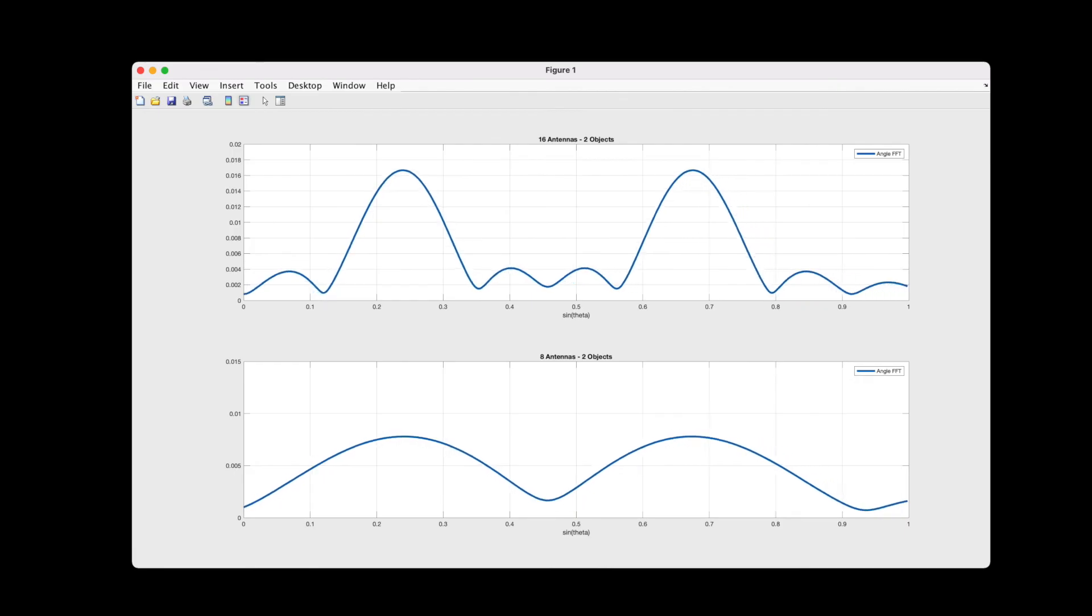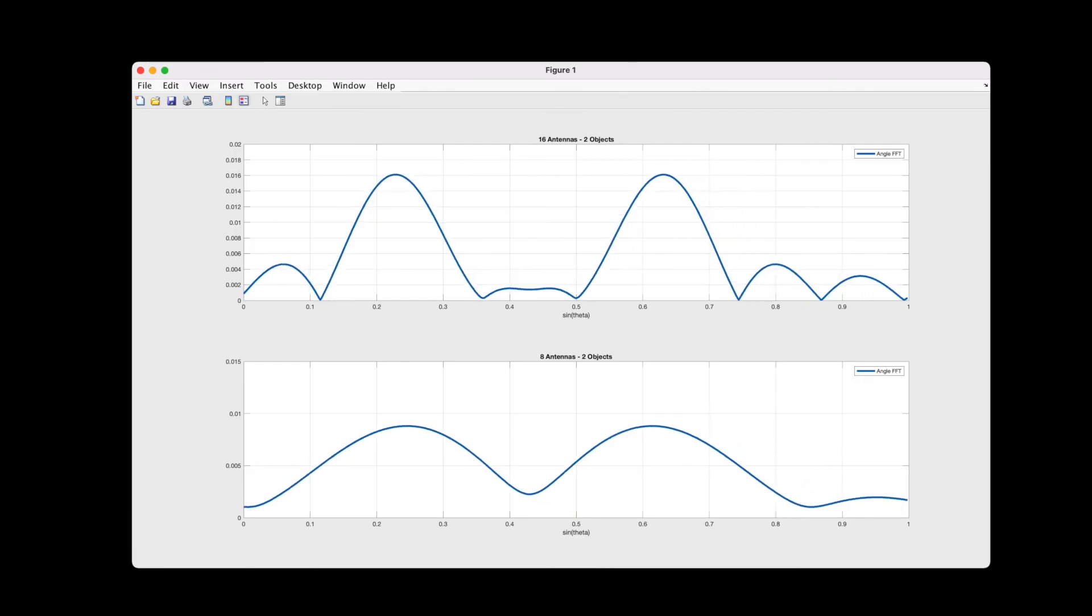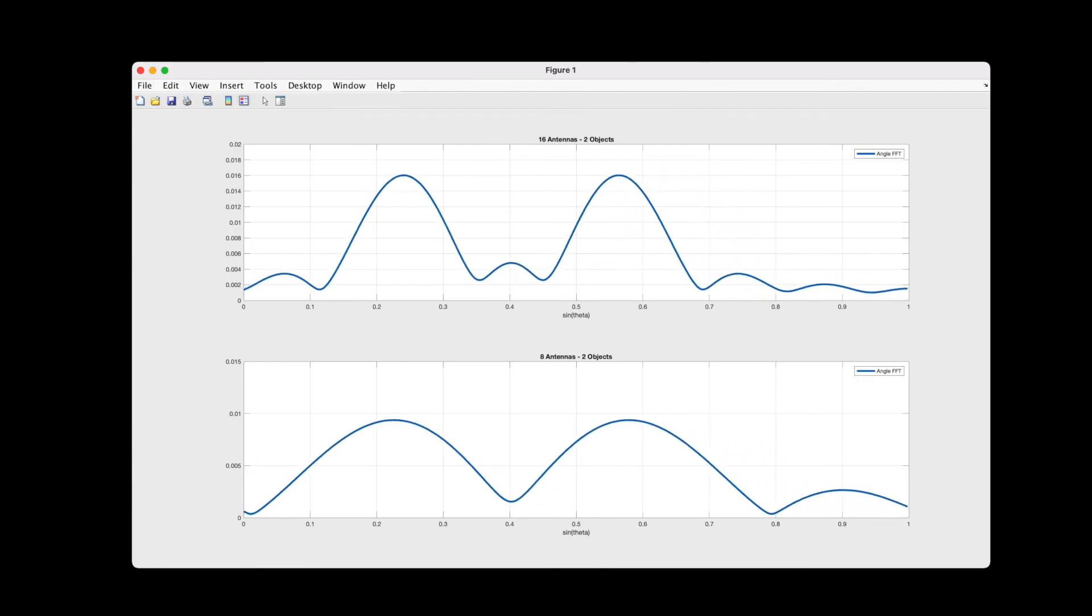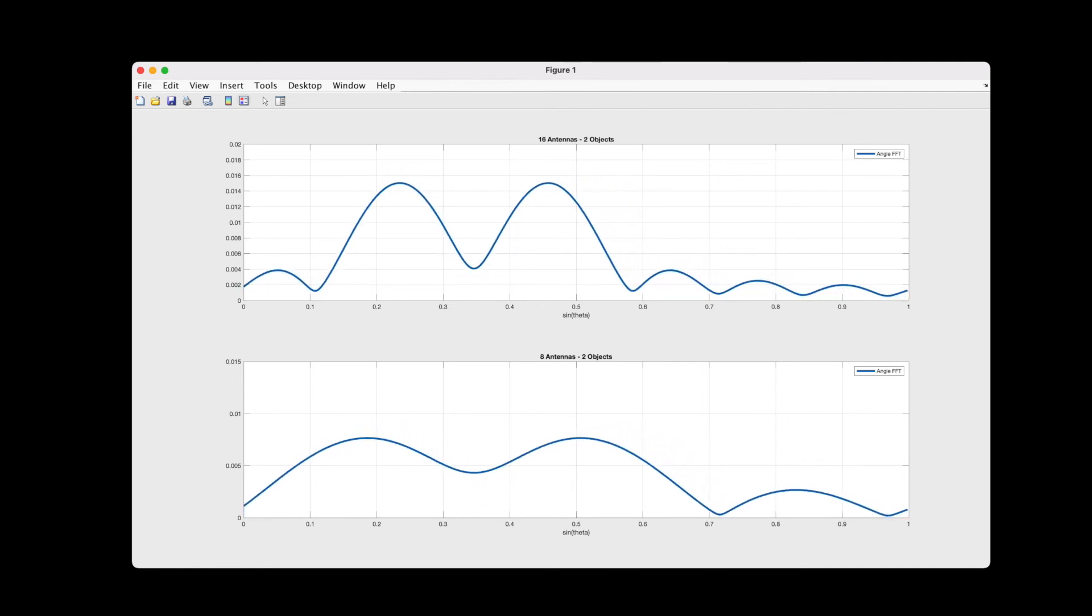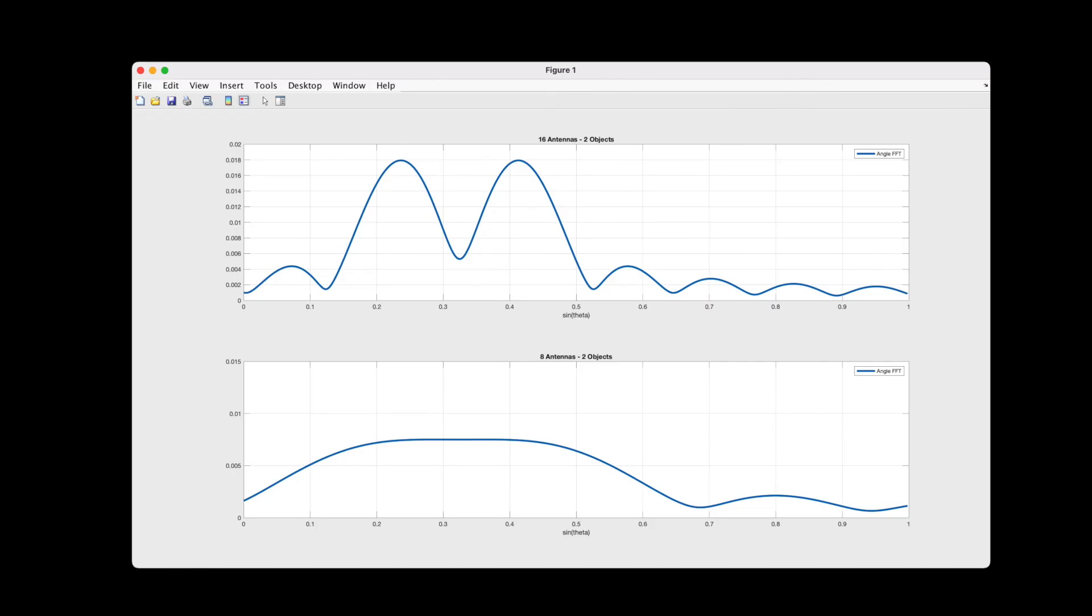But as I slowly move the right object closer to the other one, we can see how the array with eight antennas has a lower resolution. Right about here, the two peaks merge into a single peak for the eight antenna case. And this happened right around a separation of 15 degrees or so. This means that with eight antennas, the angle between the two objects can't be resolved, as there is only a single peak in the FFT. And so, it looks just like a single object.